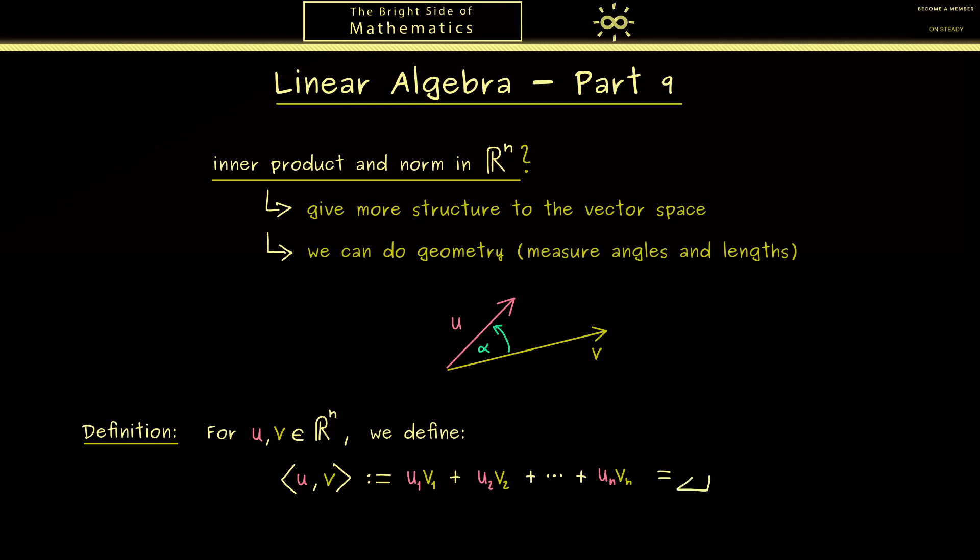In short we simply have the sum starting with i equals 1 going to n, and then we can just write u_i times v_i. Hence the standard inner product of two vectors gives us a scalar.